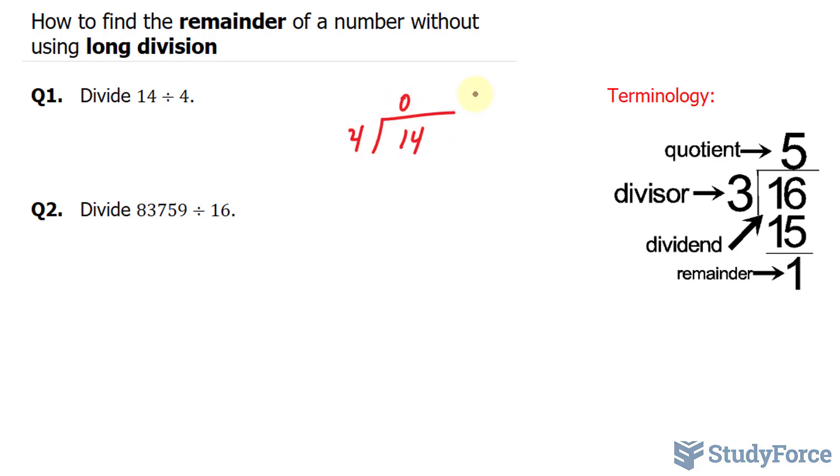How many times does 4 go into 14? 3 times. 3 times 4 is 12, and we end up with the remainder 2. Now how can we find the remainder 2 without doing this? Here's how. There are two methods.